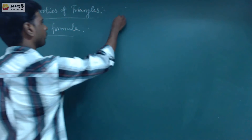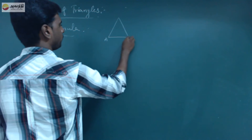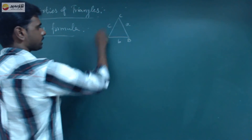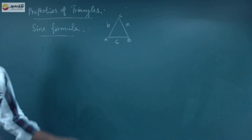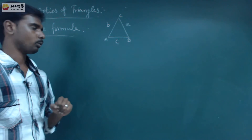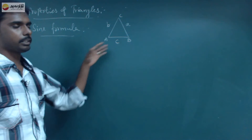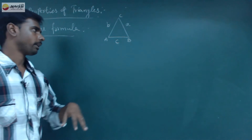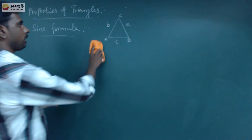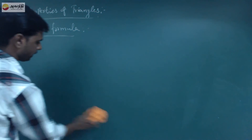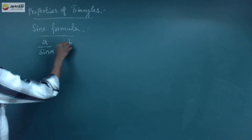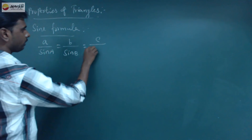There are triangles with vertices A, B, and C. What do we know about triangles? There are 3 angles and 3 sides. If you add the total angles, it will be 180 degrees. We can use some formulas to derive other formulas. First, the sine formula: a/sinA = b/sinB = c/sinC.